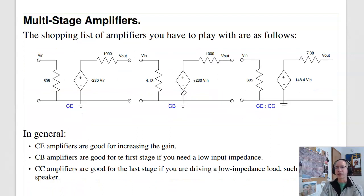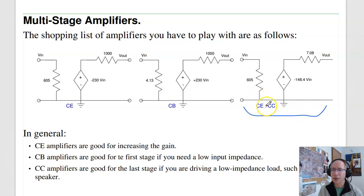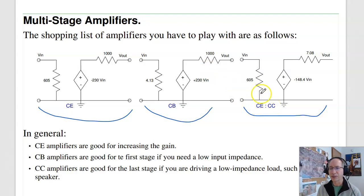With a common emitter/common collector, the last stage is common collector, where A_i is not equal to zero. Usually the stages in the middle are common emitter. That gives you three different building blocks: the common emitter has high gain and high input impedance; the common base has low input impedance, high gain, and high output impedance; the common collector has high input impedance, fairly high gain, and low output impedance. The common collector will be the last stage if I want to drive an 8-ohm speaker. The common base will be the first stage if I have a low input impedance source. All the stages in the middle are common emitter.